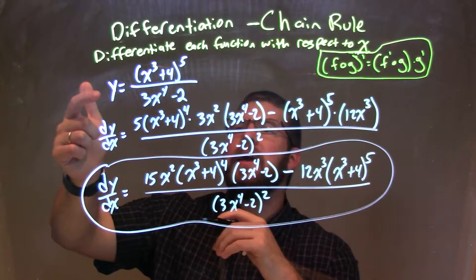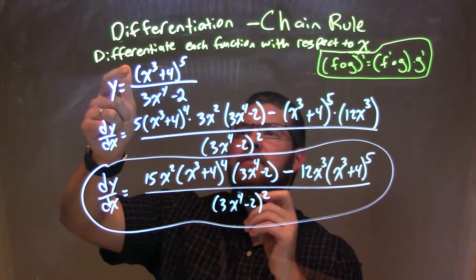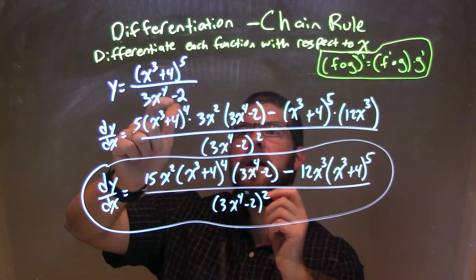So let's recap here, we're given y equals x to the third plus four, all to the fifth power, over 3x to the fourth minus 2.